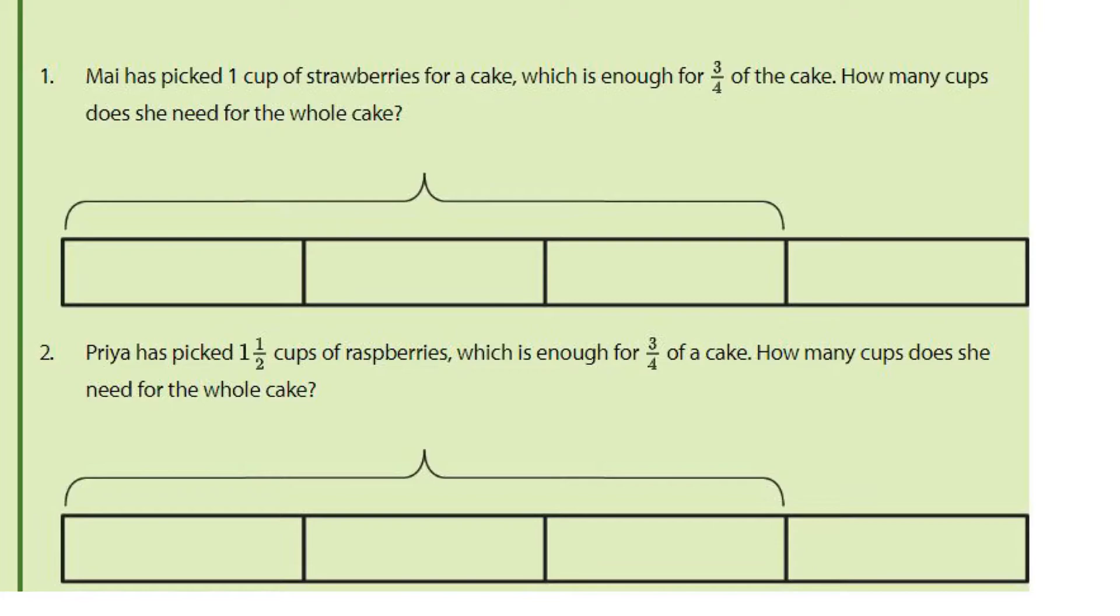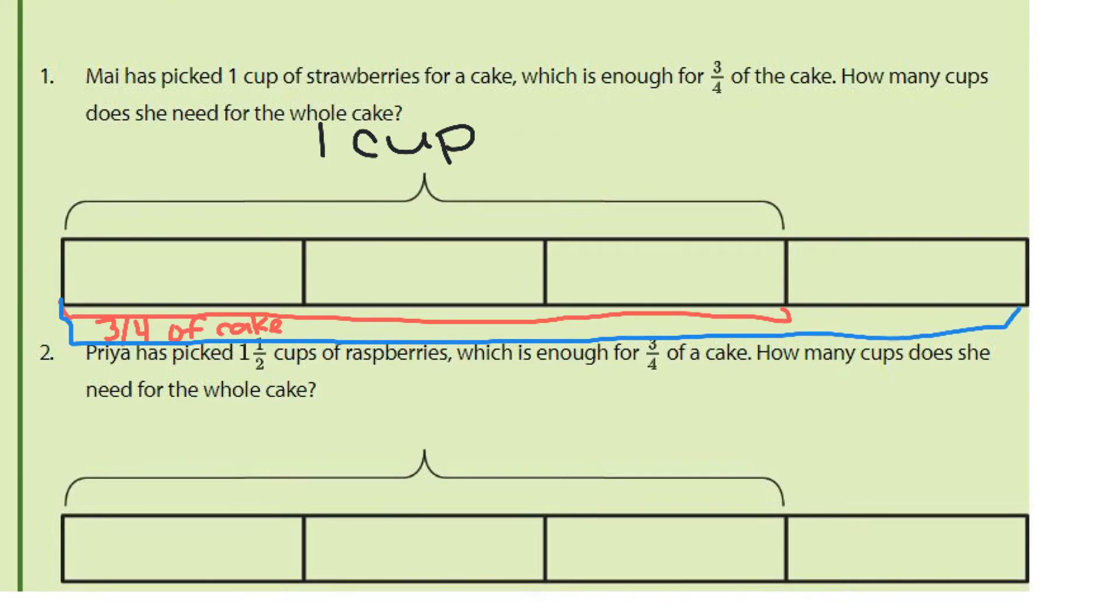Well, what do we know? We know she's picked one cup of strawberries for the cake, which is three-fourths of the cake. And so we're going to put our one cup here. Now we know just this portion here is three-fourths of the cake, which would make all of it here the entire cake.